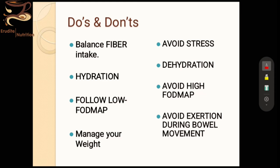Let's discuss the do's and don'ts for treating lower GI ulcers and inflammatory diseases. Number one: balance fiber intake. Too high fiber or too low fiber both cause problems, and different types of fiber may or may not suit you, so we'll use a hit-and-trial method. We must keep fiber in a balanced state — too high is problematic, and too low is also problematic.